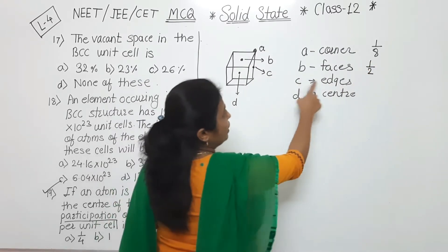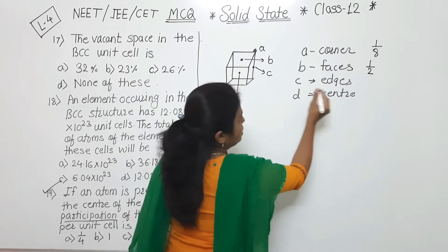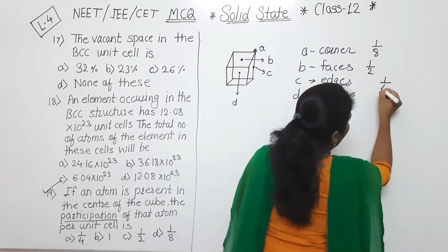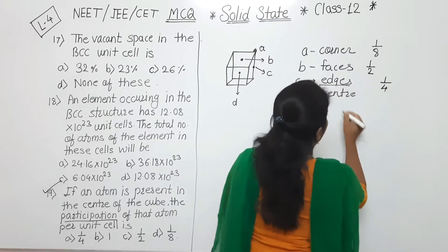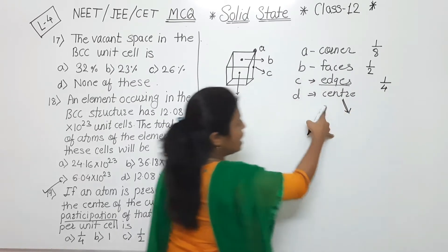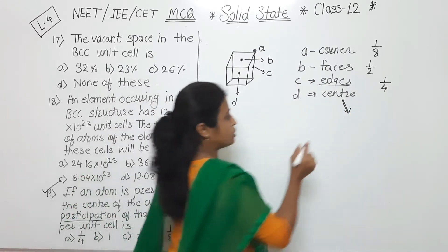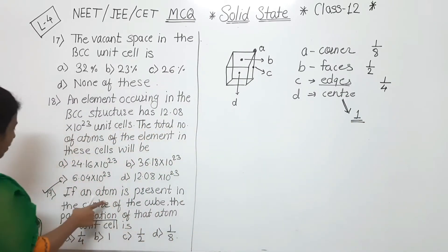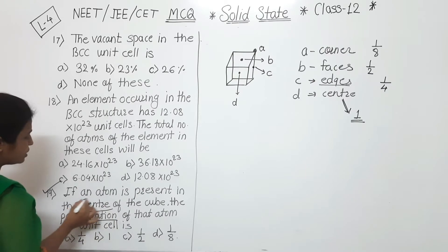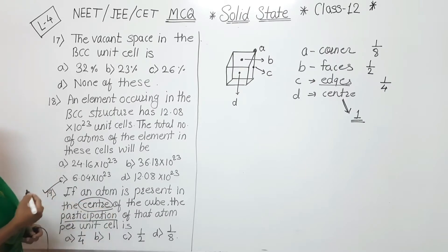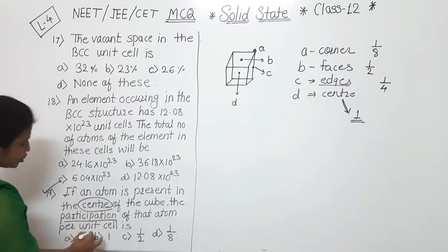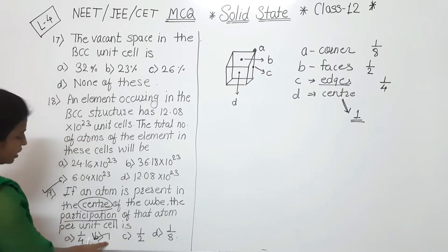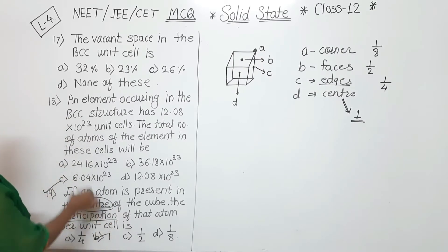If atom is present at the edges, its participation is 1/4. And if atom is present at the center of the cube, its participation will be 1. So here they asked about the atom at the center — its participation is 1. So we have completed this MCQ; its answer is option B.